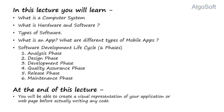Number one: what is a computer system in general — what it all includes. Number two: hardware and software — how hardware is different, how software is different, how they are connected together. Then we'll dive deep into what software is, because we as web developers would be dealing with softwares — those could be your code editing softwares, your design softwares, and other things.